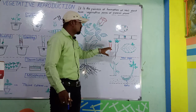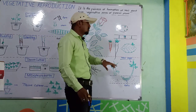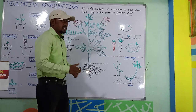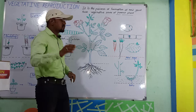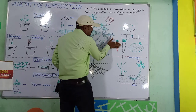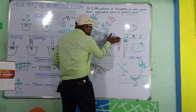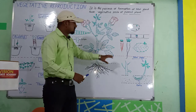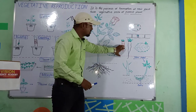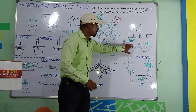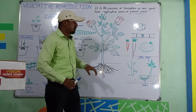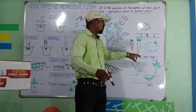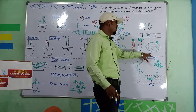On the other hand, carrot and radish are examples of root-based vegetative propagation. If we grow the root of carrot or radish, a new plant will grow from it.